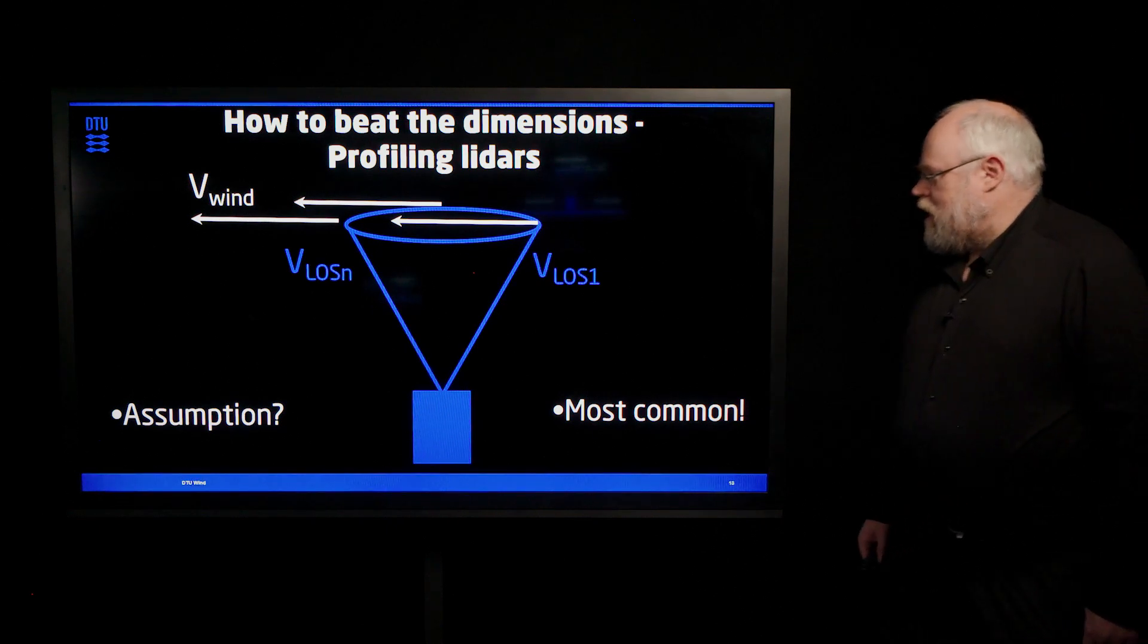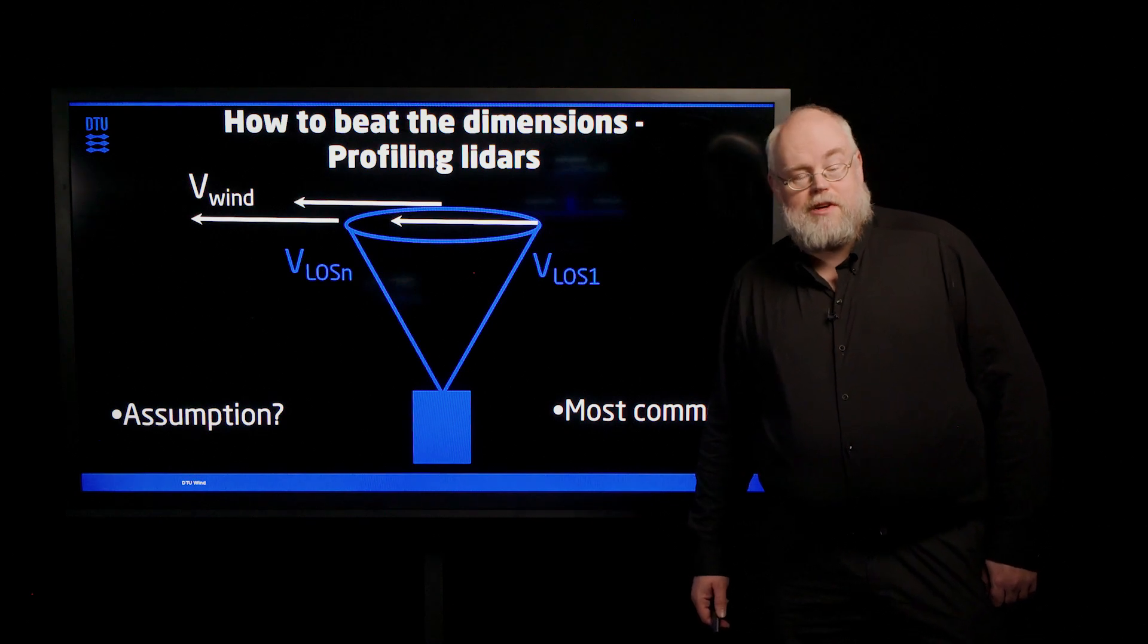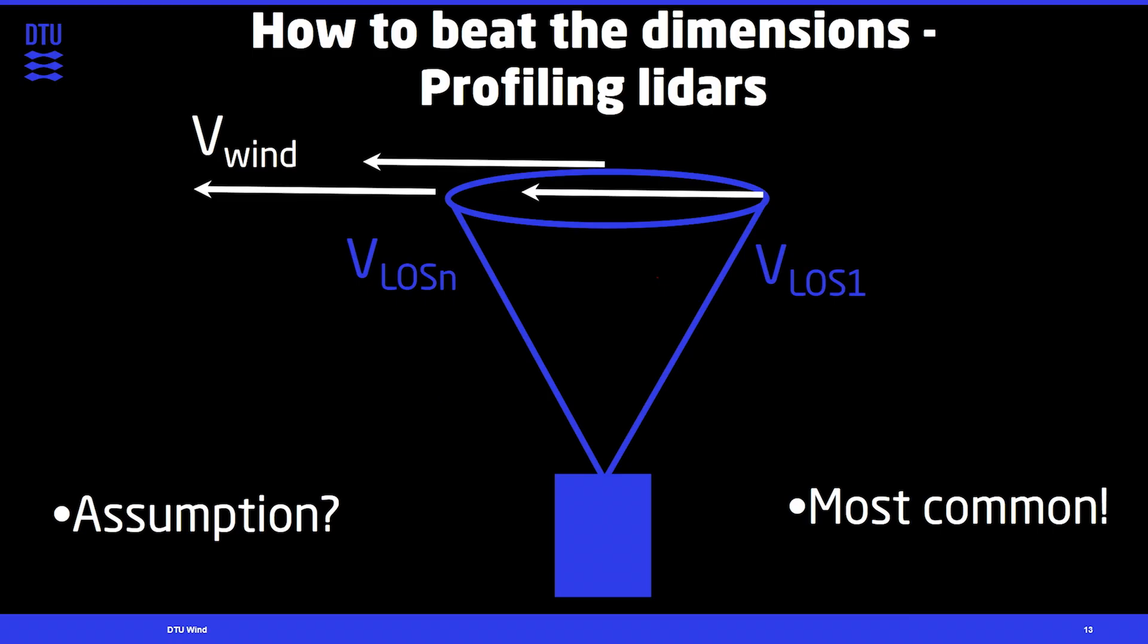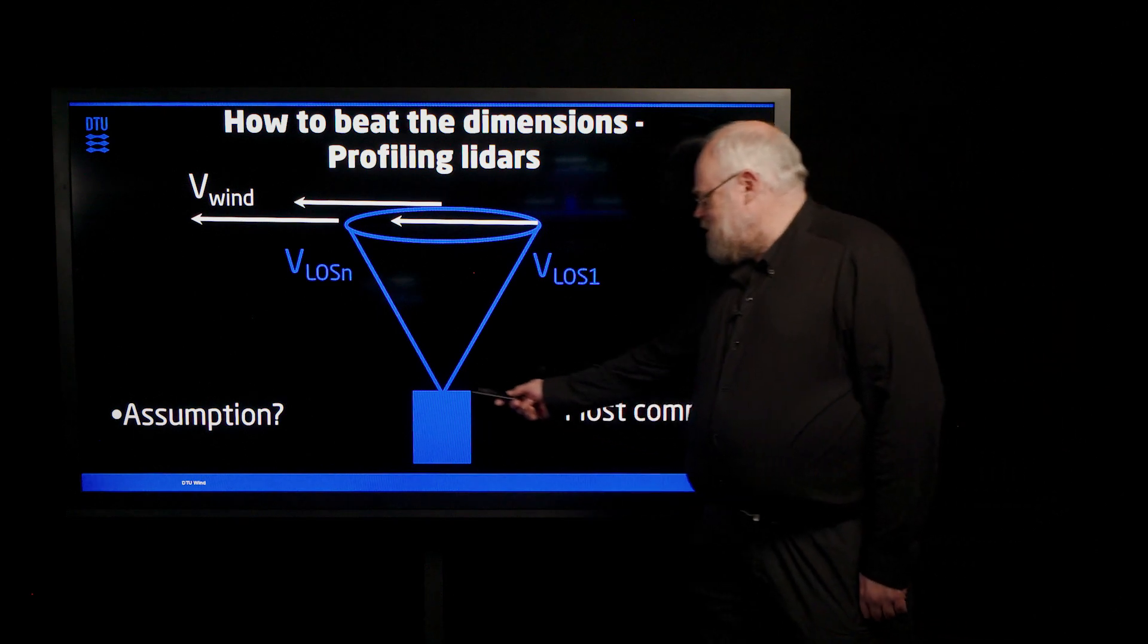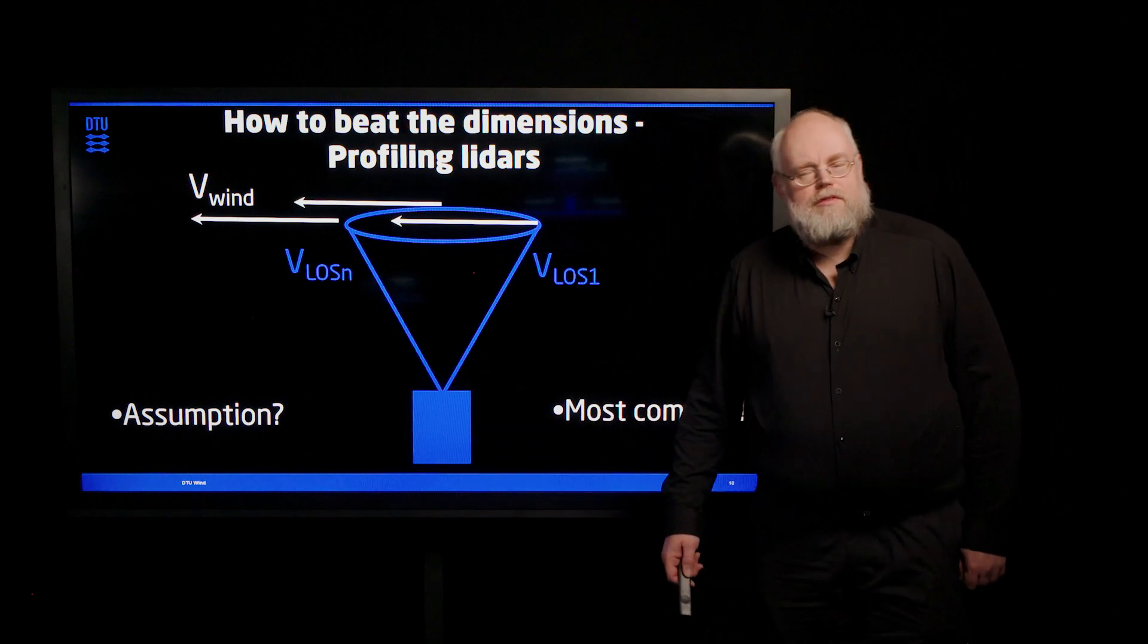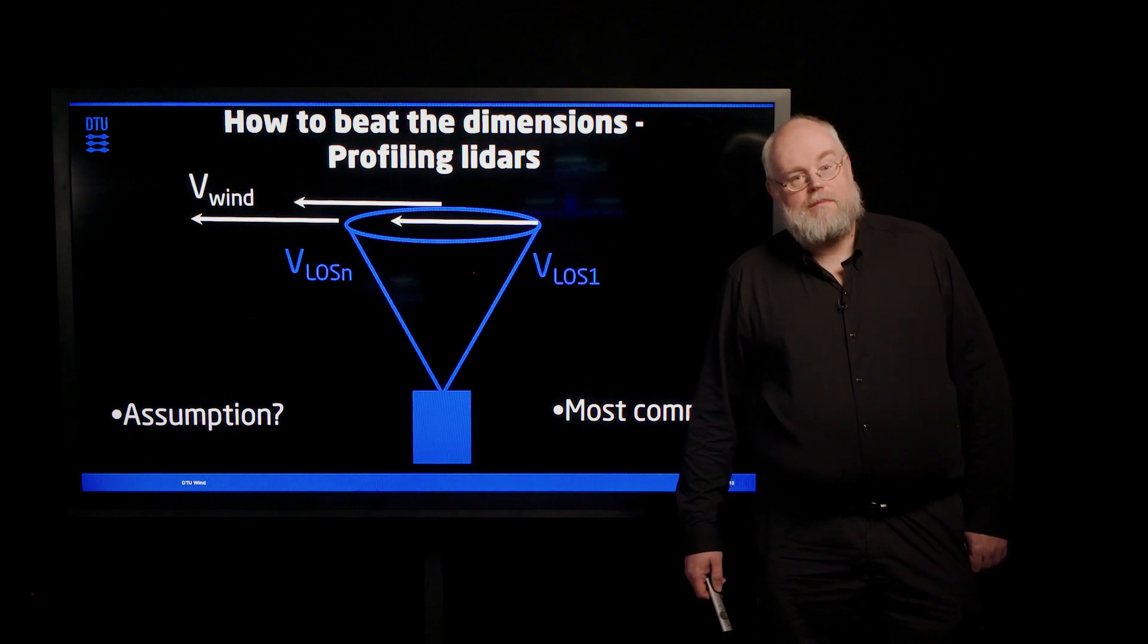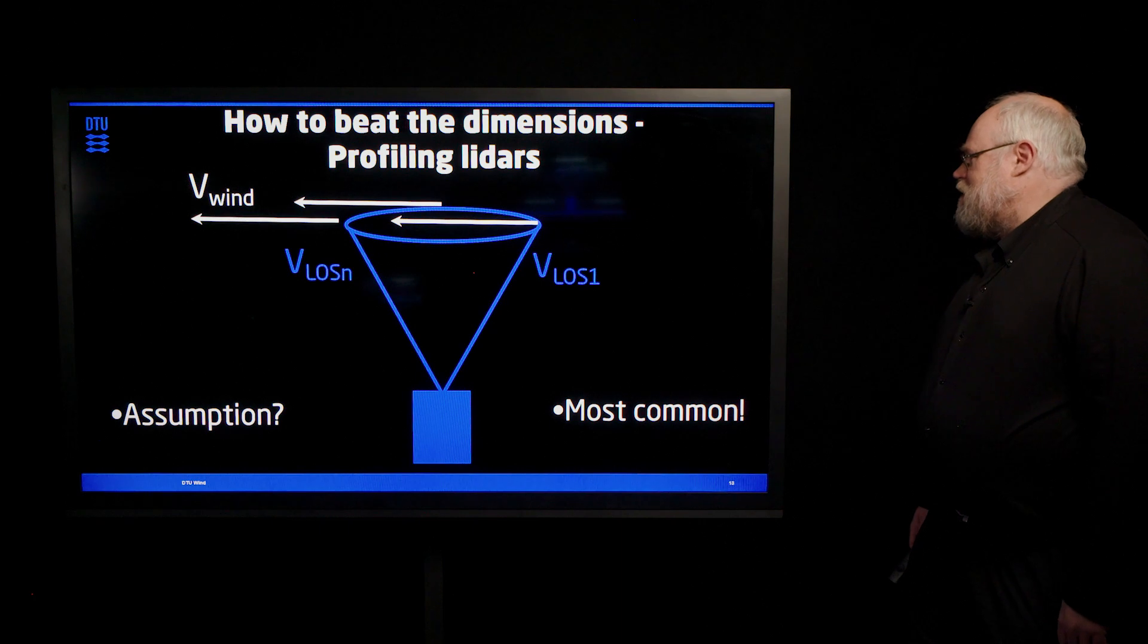We have talked now about these different ways of measuring several components of the wind. But this is not the most used case out in the wind industry. Most often, remote sensing, when you talk about that, it is from one instrument. Not from three instruments, but just from one instrument. But how can it then measure all the three wind components from one point? Well, that is possible if you do some assumptions.